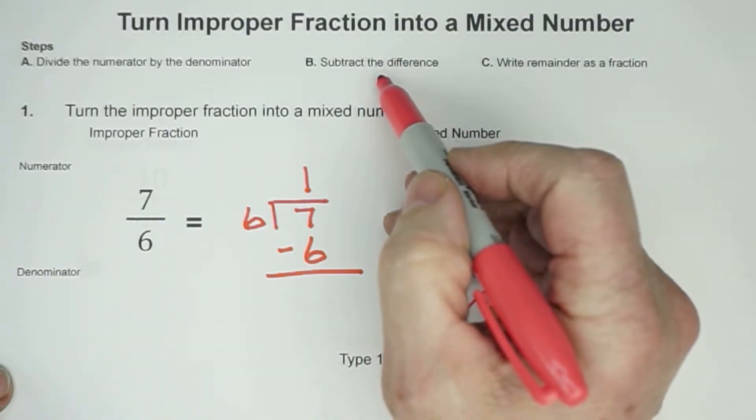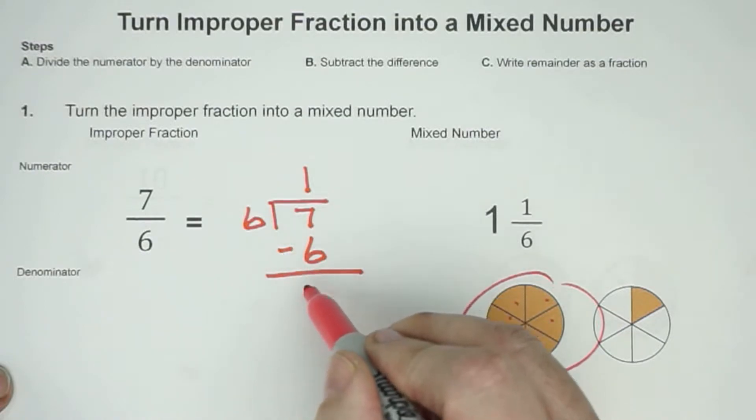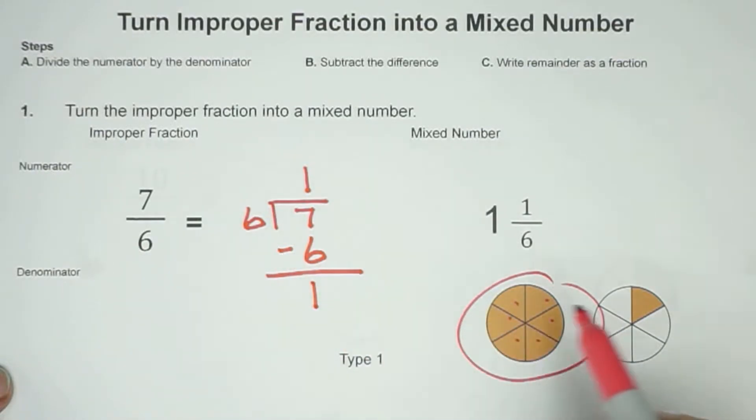Our second step is to subtract. 7 minus 6 is 1. And you can also see that here in the model. If we were to have a total of 7, and we take this group away, you're just going to have that 1/6 right there.